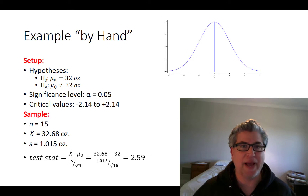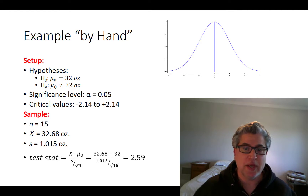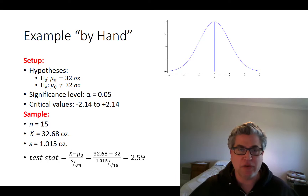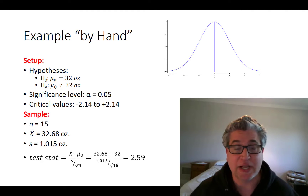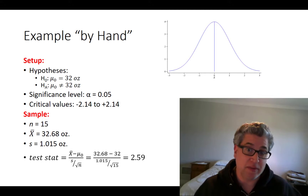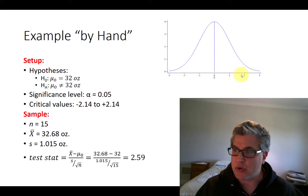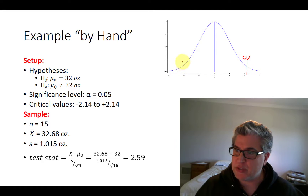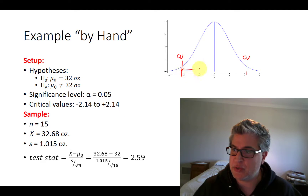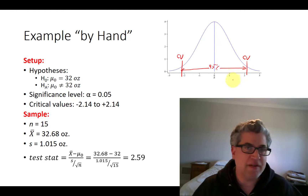Let's work out an example real quick by hand before we go into Excel. Let's say that we would like to fill something up with 32 ounces of fluid. We don't want to overfill, we don't want to underfill. So periodically we sample 15 bottles and see whether we're over or underfilling. Since both over and underfilling is bad, a two-sided test is the natural test that we want to do. If we're testing at the 5% level, we need to just reflect that in the critical values.